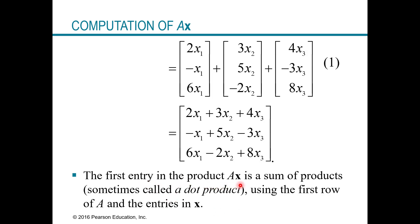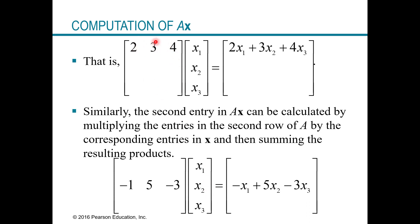The first entry in the product Ax is the sum of products — also called the dot product — using the first row of A and the entries of x. You take entry 1 from row 1 times entry 1 from x, plus entry 2 from row 1 times entry 2 from x, plus entry 3 from row 1 times entry 3 from x. You repeat this for each row: row 2 times column 1, row 3 times column 1, giving you your three equations.